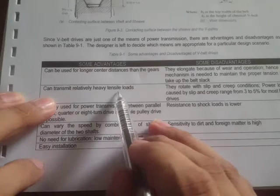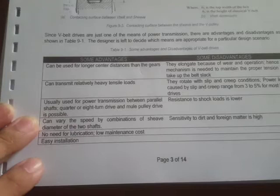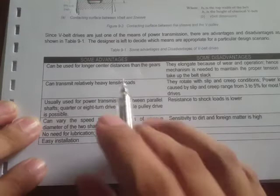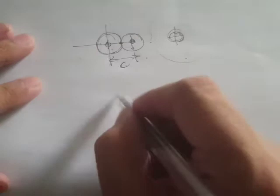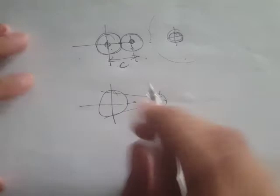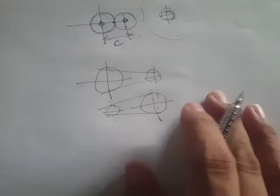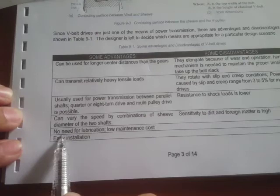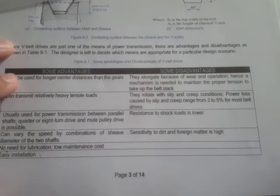Belt drives are usually used for power transmission between parallel shafts or also perpendicular shafts. Another advantage is the ability to vary speed by combining different sheave diameters on the two shafts — larger driver diameter reduces speed at the driven, and vice versa. Belt drives also require no lubrication and have low maintenance cost and easy installation.